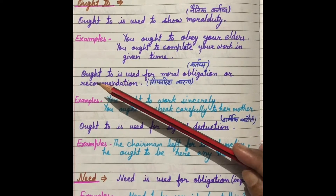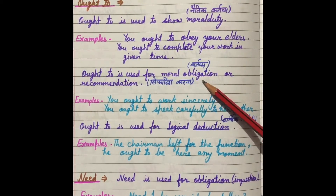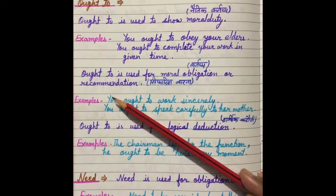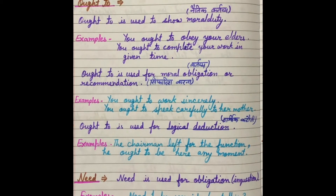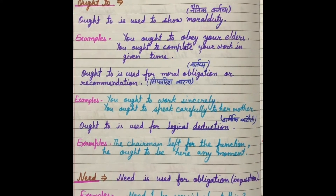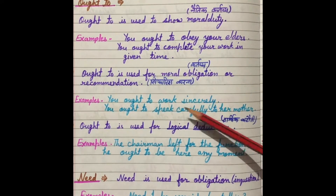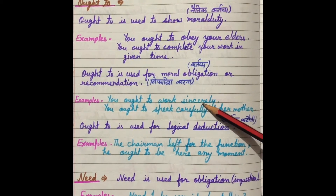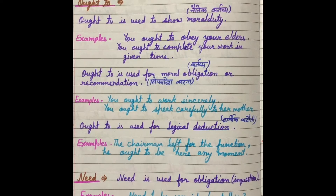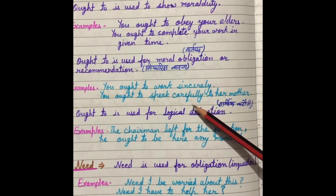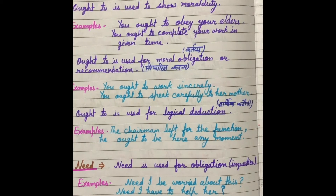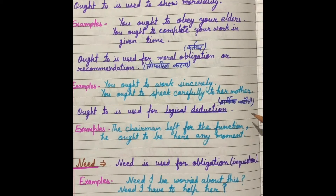The second use of ought to: ought to is used for moral obligation and recommendation — नैतिक कर्तव्य और सिफारिश के लिए भी हम ought to use करते हैं. For example: 'You ought to work sincerely' — here is moral obligation, यह नैतिक कर्तव्य है. Also: 'You ought to speak carefully to her mother' — जब आप उसकी सिफारिश करने जा रहे हैं तो उसकी mother के साथ बहुत carefully और सावधानी से बात करनी है.